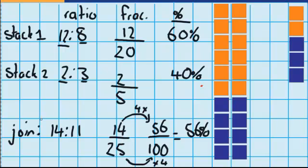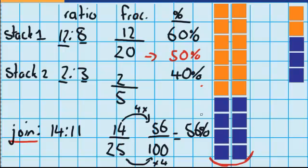Just before we worked out what would happen when we joined them together, we had a guess about where the joined percentage would fit — would it be sixty, or forty, or somewhere in between? In our last example the answer was right in the middle, so some people probably guessed fifty percent. But the difference here is that there are a lot more blocks in stack one than in stack two, so stack one carries more weight. That's why instead of being fifty, it gets bumped up a little bit to fifty-six.